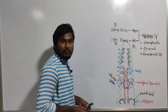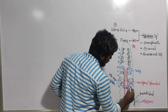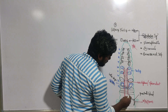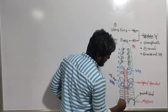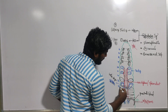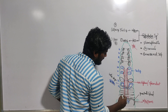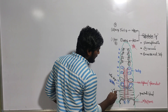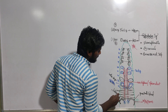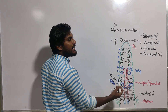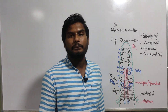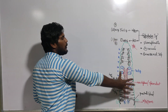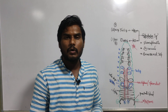In a mature earthworm, the 14th, 15th, and 16th segments are covered by a glandular tissue called the clitellum. The egg is released into the clitellum. This is about the reproductive system of the earthworm as given in the NCERT textbook.